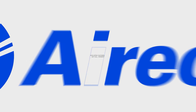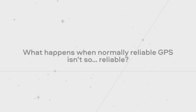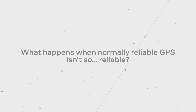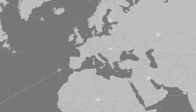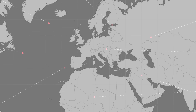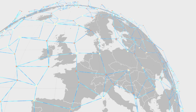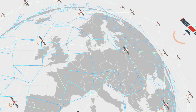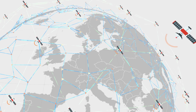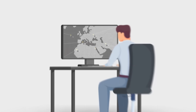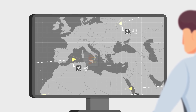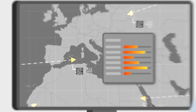What happens when normally reliable GPS isn't so reliable? It's a problem that's becoming increasingly common in many areas. ADS-B — Automatic Dependent Surveillance Broadcast — connects aircraft worldwide, sharing their location, altitude, and speed. The catch? ADS-B depends on GPS. And GPS can fail.